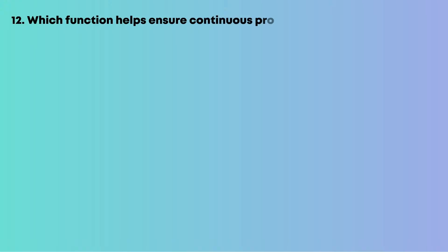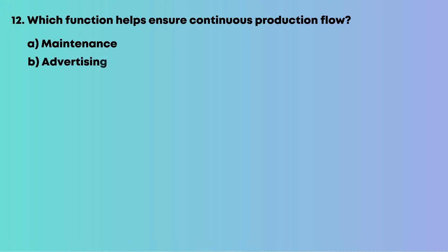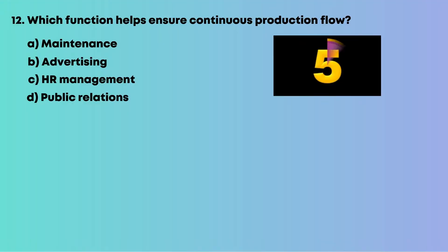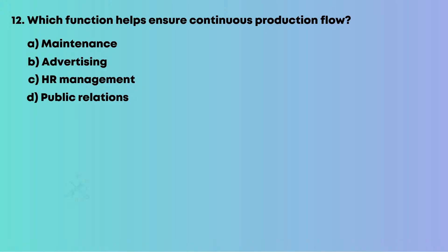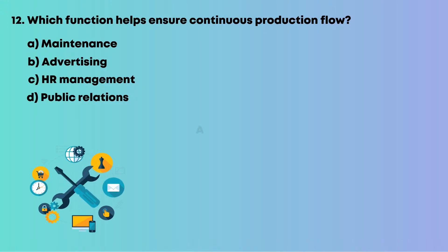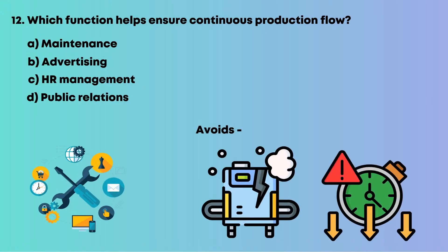Question 12: Which function helps ensure continuous production flow? Options are: A, maintenance; B, advertising; C, HR management; D, public relations. Maintaining equipment avoids breakdowns and downtime. So the answer is A, maintenance.